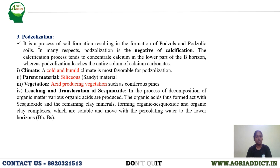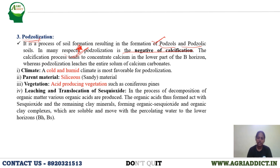Next is a very important process — podzolization. It is a process resulting in the formation of podzols or podzolic soils, a group of soils. In many aspects, podzolization is referred to as the negative of calcification. In calcification, calcium tends to accumulate in the profile, but in podzolization calcium gets removed — so it can be termed the negative of calcification.